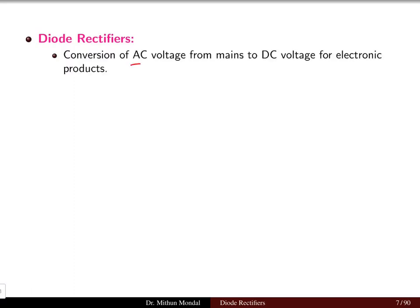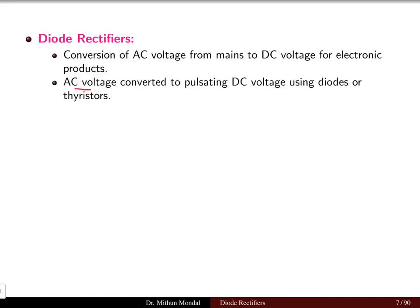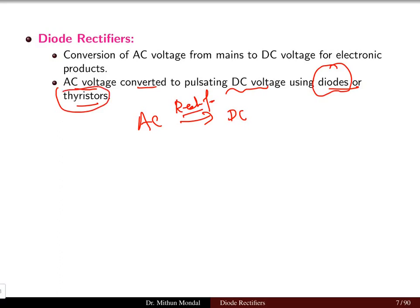Diode rectifiers convert AC voltage from the main supply to DC voltage for electronic products. Electronic loads generally consume DC power at a very low voltage, so diode rectifiers are required. AC voltage is converted to a pulsating DC voltage using diodes or thyristors. There is a difference between these two devices: a diode is an uncontrolled device whereas a thyristor is a controlled device.